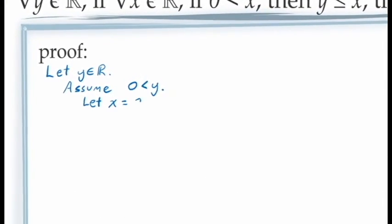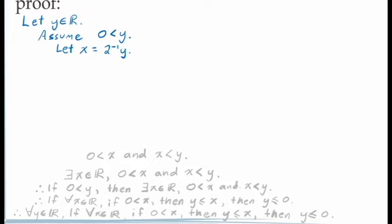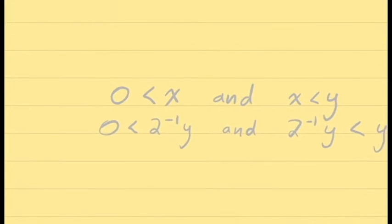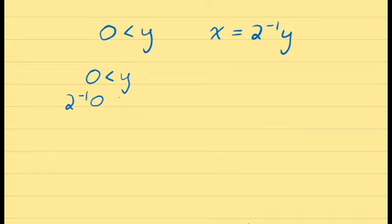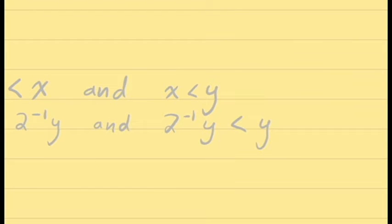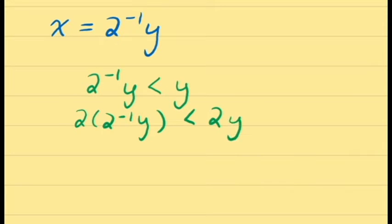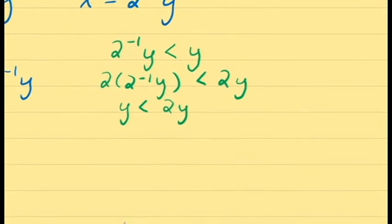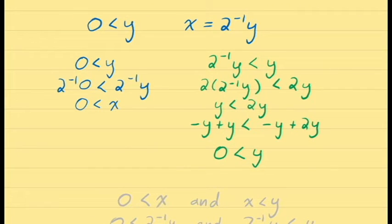Letting x equal the specific value y over 2, we now have a clear direction: we must demonstrate that y over 2 is both greater than 0 and less than y. The demonstration that y over 2 is larger than 0 is fairly simple. We already have the assumption that y is greater than 0, so we multiply both sides by the inverse of 2. Since the inverse of 2 is positive, axiom 0.4 tells us the order of the inequality is preserved. For the second inequality — that y over 2 is less than y — let's work backwards: starting from y over 2 less than y, multiply both sides by 2 to get y less than 2y, then subtract y from both sides to get 0 less than y, which is our assumption.